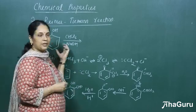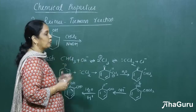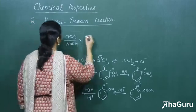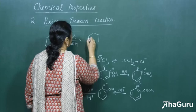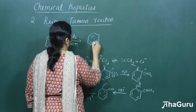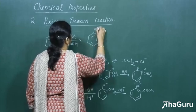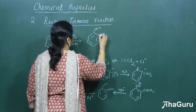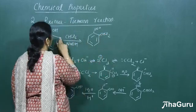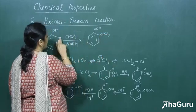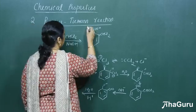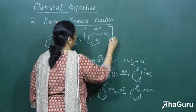The next very important reaction is called the Reimer-Tiemann reaction. Here we treat phenol with chloroform in the presence of a base like sodium hydroxide. First, we get an intermediate with an ONa group and a CHCl₂ group. A hydrogen from this carbon and a Cl are removed as HCl, giving us an intermediate.